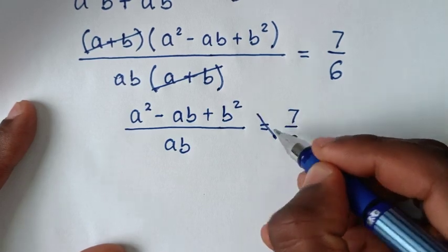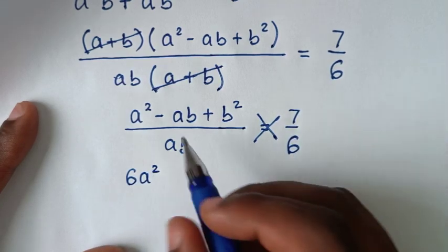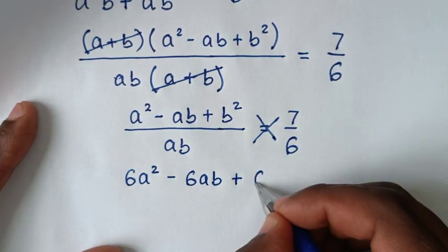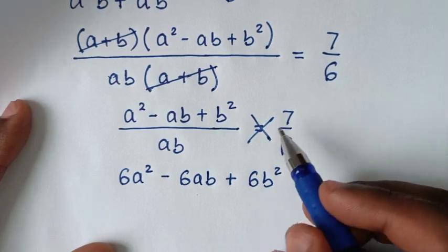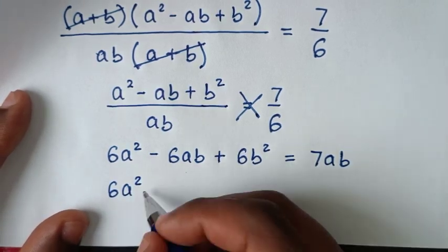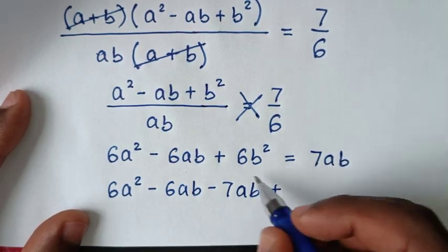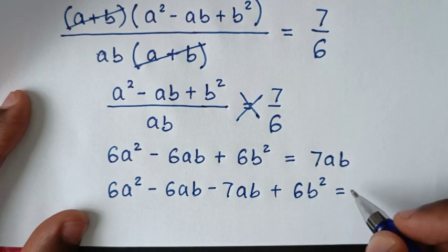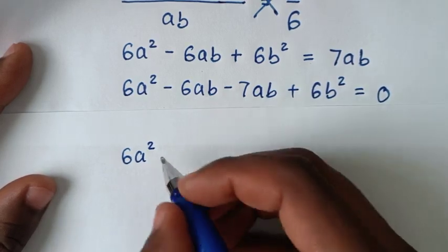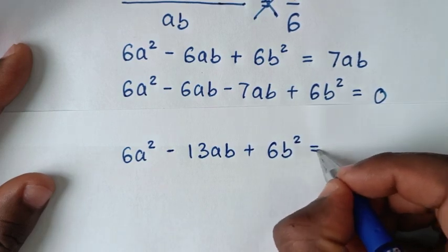From here we cross-multiply: 6(a² - ab + b²) = 7ab, so 6a² - 6ab + 6b² = 7ab. Taking 7ab to the left side: 6a² - 6ab - 7ab + 6b² = 0, which gives 6a² - 13ab + 6b² = 0.